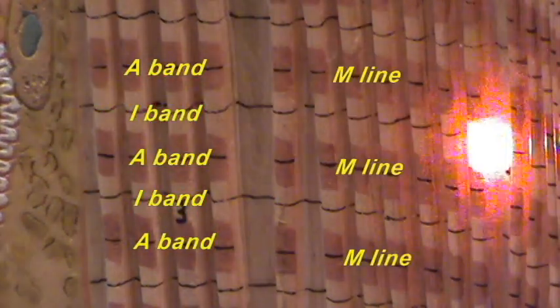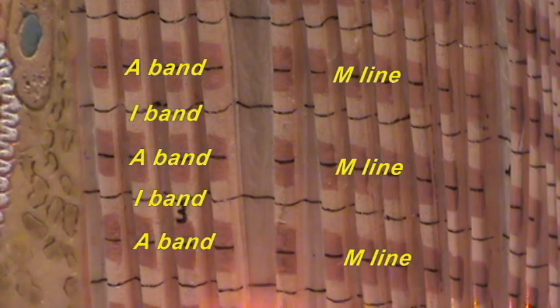In the middle of the dark bands, you have M lines, which are represented by these dark lines that you find in the middle. And in the middle of the I bands, you have a line which represents the Z disks or the Z lines.